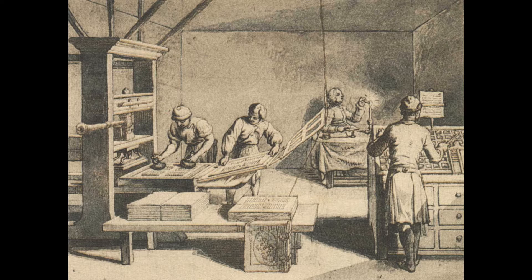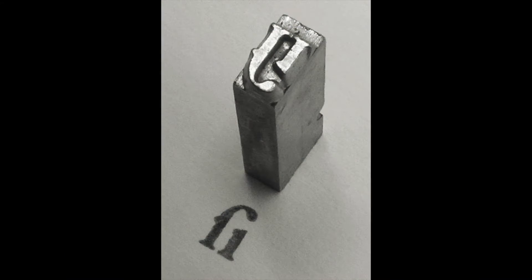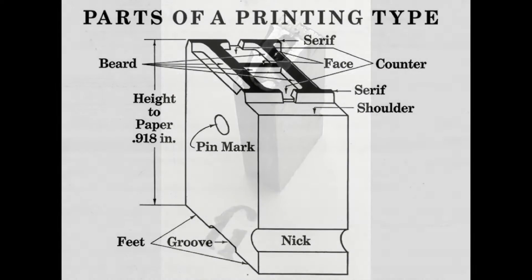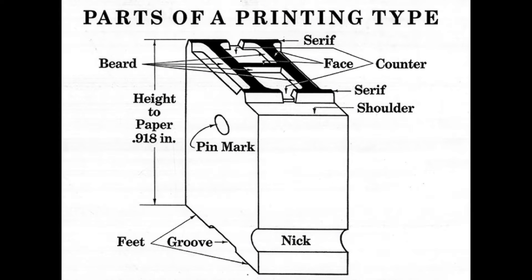For nearly 450 years, Gutenberg's invention of founding metal type changed almost not at all. Created at the dawn of the Renaissance, the three-dimensional type piece, known in the trade as a sort, took on human descriptors. A type sort had feet, a body, shoulders, even a beard. Most importantly, it had a face which, when inked, interacted with the paper to create the print.